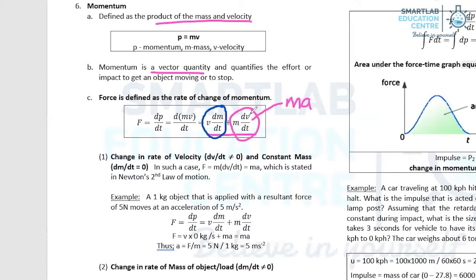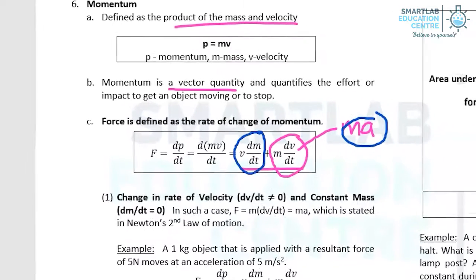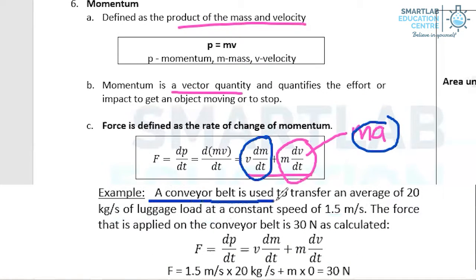So for example, there will be cases whereby ma is zero. Let's take a look at this example where a conveyor belt is used to transfer an average of 20 kilograms per second of luggage load at a constant speed of 1.5. So if the speed is 1.5, then basically the object is not undergoing any form of acceleration. So you can see that your ma is zero. So in this case, F will be equal to v dm dt. So the speed is 1.5 meter per second, while the dm dt is 20 kilograms per second. So from there, you end up with 30 newton.